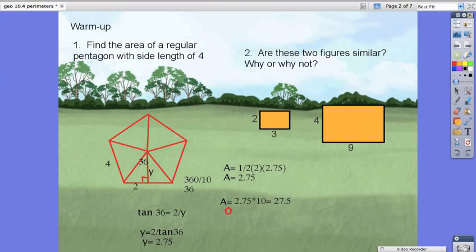But if we look at the base size, it's 3 to 9, which is triple. Therefore, these are not similar.